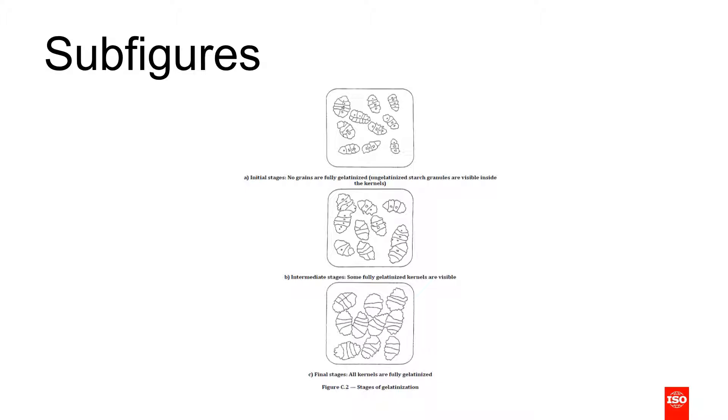Figures can be divided into sub-figures if necessary, but there should only be one key for the entire figure, not one for each of the sub-figures. And each sub-figure should be explained by the use of a subtitle, as shown in this example.